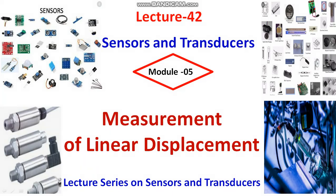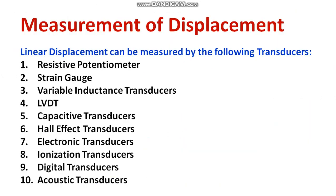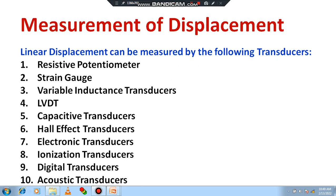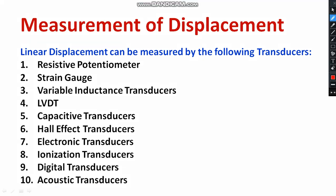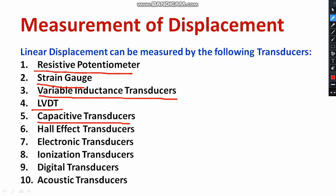There are many applications to measure the displacement in the industry. There are different techniques to measure displacement, as given in the PPT. A simple method is by using a resistive potentiometer. Then you can use the strain gauge, variable inductance transducers, and linear variable differential transducers.